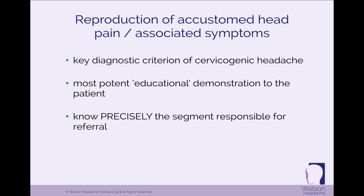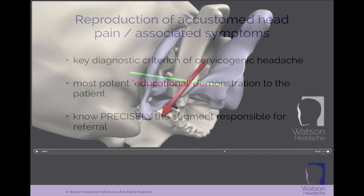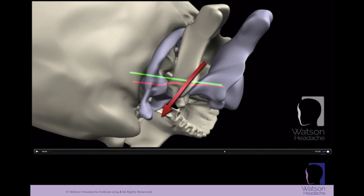Furthermore, there are techniques which enable localisation of the segment responsible for head pain referral. Here we're doing a PA on the articular pillar — the left articular pillar of C2 — with the head turned to the right. Head pain referral in this position confirms C2-3 as the segment responsible for head pain referral.